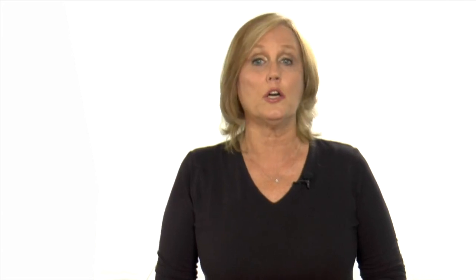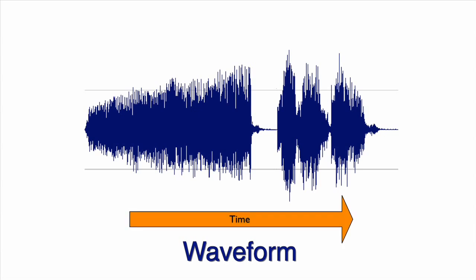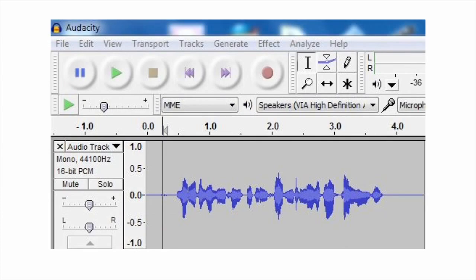One of the key components of working with digital audio is the waveform, which is the visual representation of sound waves. The horizontal axis measures time, while the vertical axis measures amplitude, or the loudness of the audio signal, such as your recorded voice.